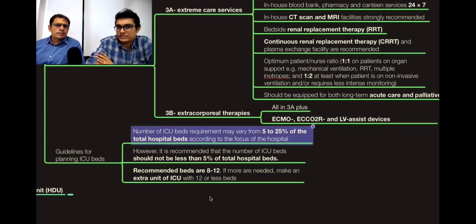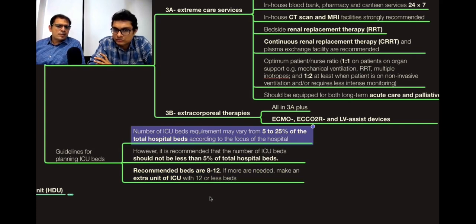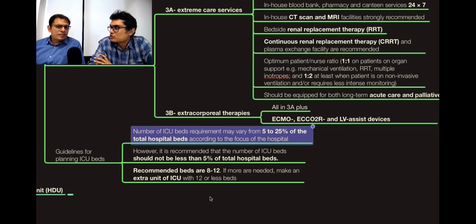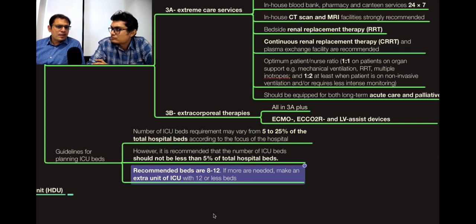Regarding the number of ICU beds: in normal hospitals, at least 5% of hospital beds should be ICU beds. In specialized hospitals — cardiac, cardiothoracic surgery, nephrology, or neurosurgical units — up to 20 to 25% of hospital beds should be ICU beds. Less than 5% is never recommended as it would be inadequate. The ideal recommendation is 8 to 12 ICU beds per unit; beyond 12 beds, plan a separate new unit.